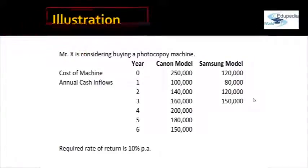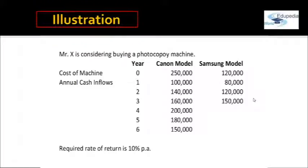Let's jump to an example of unequal lives. Mr. X is considering buying a photocopy machine. Note that investment is always made at period zero, and while benefits accrue throughout the year, for computation purposes we always take cash inflows at the end of the year. For example, if Canon's first-year inflow is 1 lakh and Samsung's is 80,000, we record these at year-end. The required rate of return is 10%.